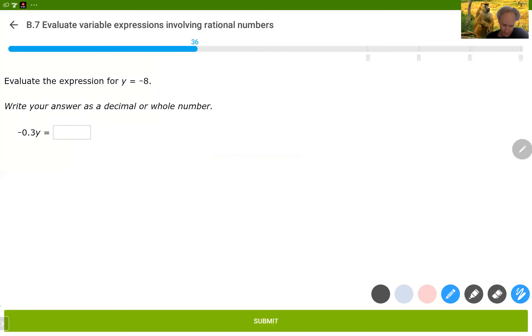Negative 0.3 times negative 8. We need to be careful. We've got a double negative there. And that would be 24 if there were no decimals involved. But there is a decimal and we move it in place. So 2.4.